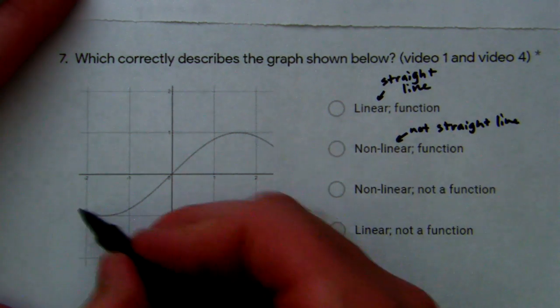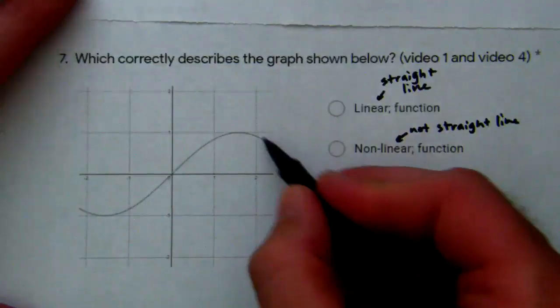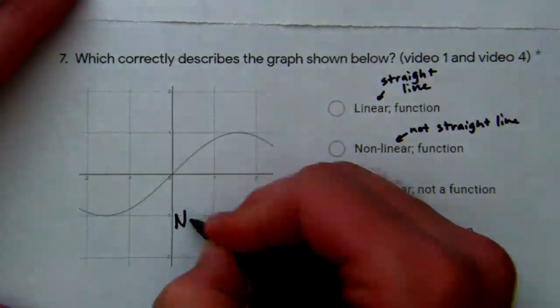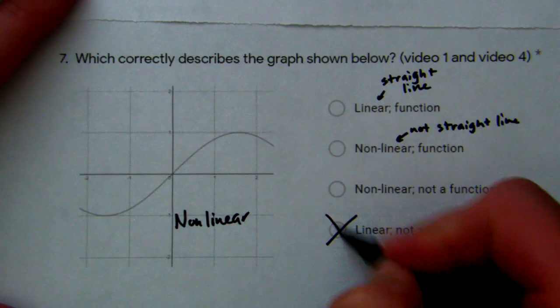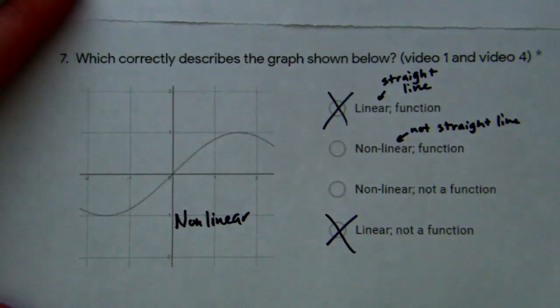So is our graph right here, is that a straight line? It is not a straight line, so we know it is nonlinear. So we can cross off these two answers right away because they say they're linear.